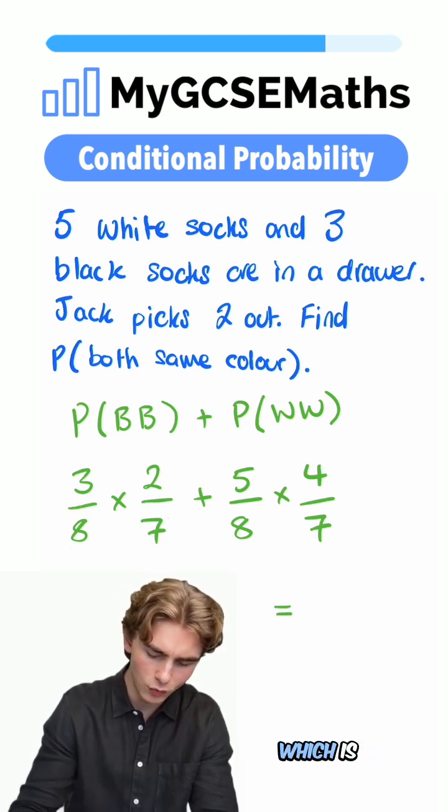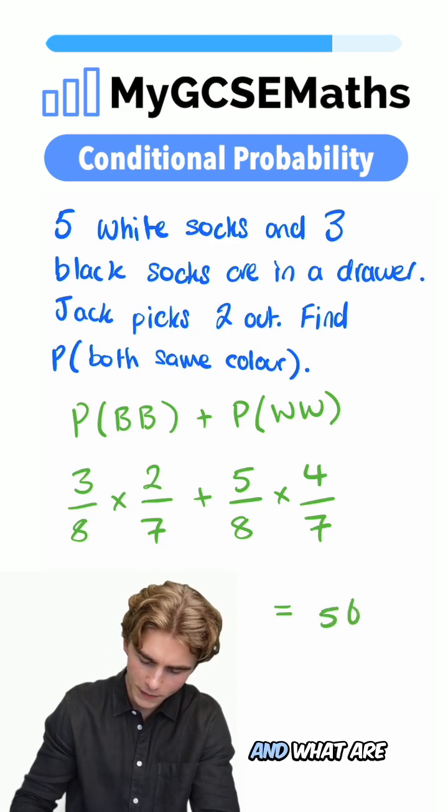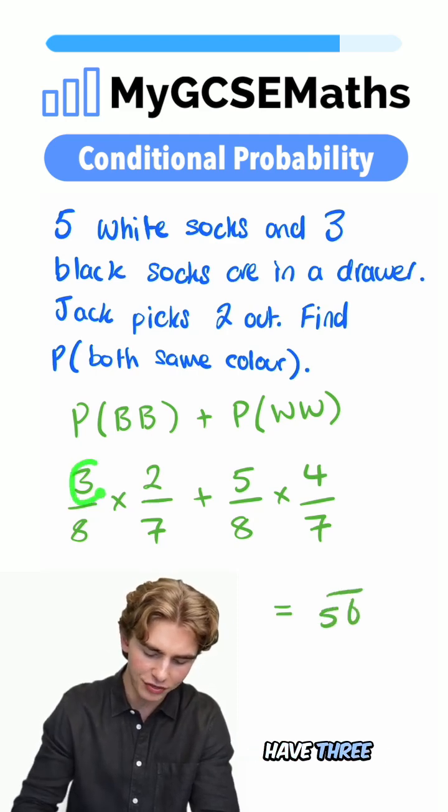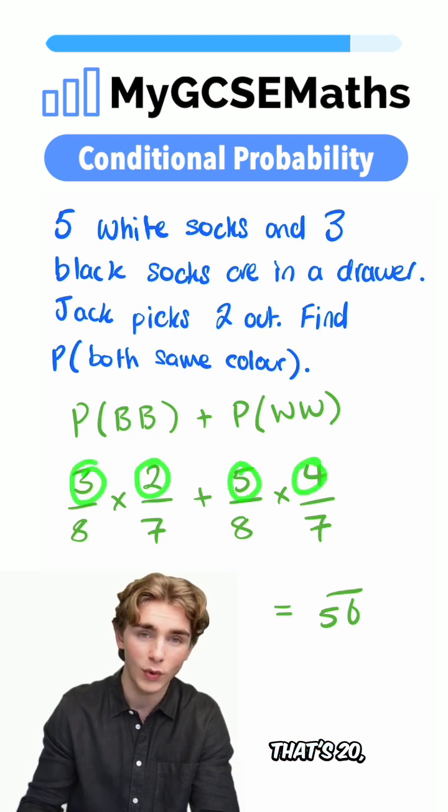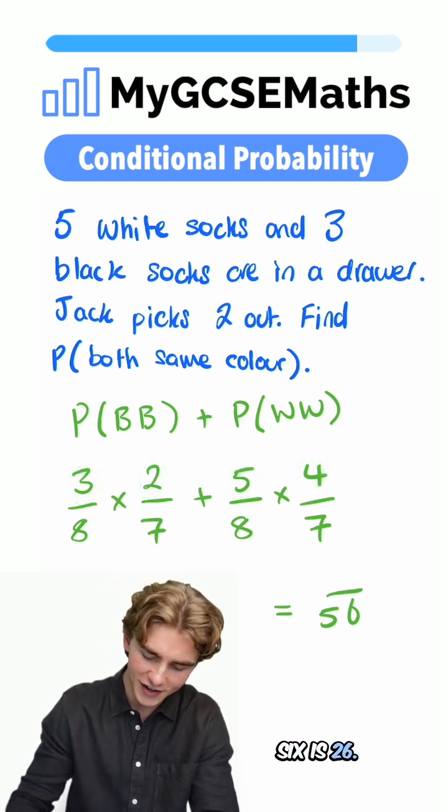What do we have on the top? We have 3 times 2, that's 6, plus 5 times 4, that's 20. 20 plus 6 is 26, so we get our answer: 26/56.